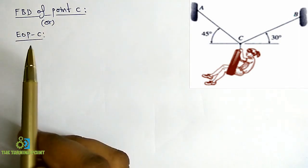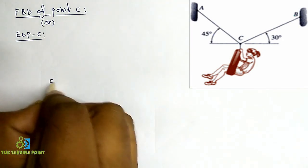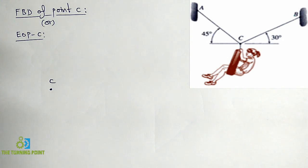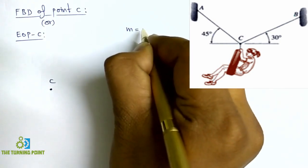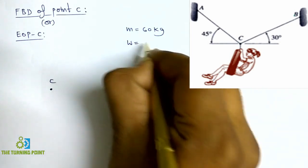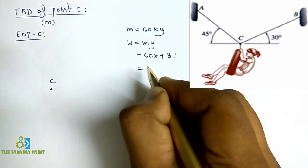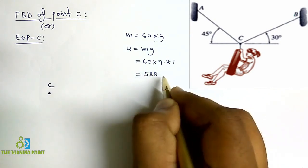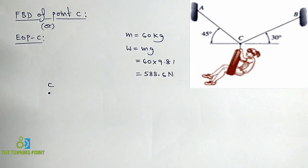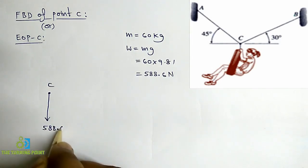Let us draw the free body diagram for point C. First, denote point C. The weight of the girl along with the tire is acting vertically downwards — that is given as 60 kg mass. So we convert it: W = MG = 60 × 9.81 = 588.6 Newtons. This weight is acting vertically downwards from point C.